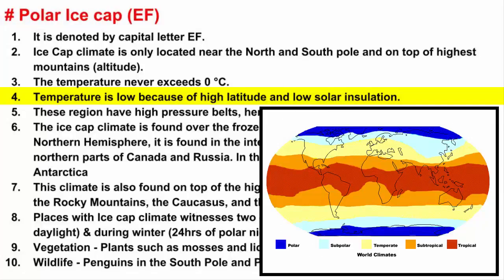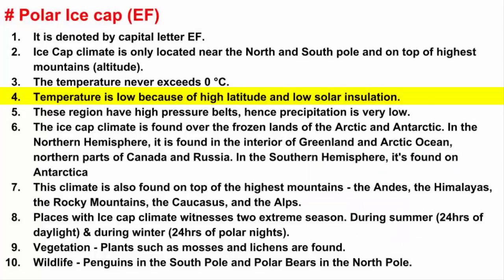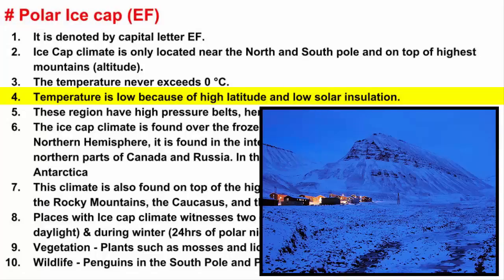The high latitude location is the primary cause of the extremely cold temperatures and dry conditions. At such a high latitude, sun angle and insolation intensity is low. The sun never rises above the horizon during the long months of the polar night.